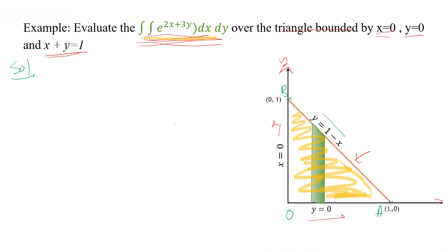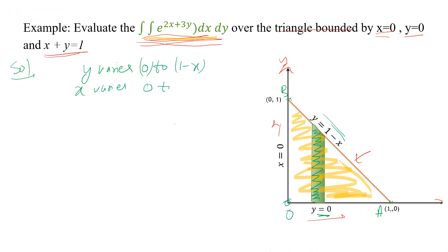To evaluate the integration, we first set up the limits. Taking the strip along the y-axis, y varies from 0 to 1 minus x, and x varies from 0 to 1. So the limit of integration is: outer integral 0 to 1 for x, and inner integral 0 to 1 minus x for y.